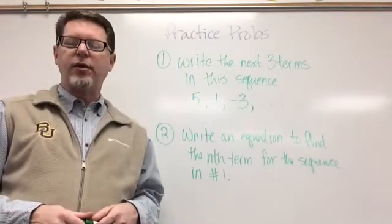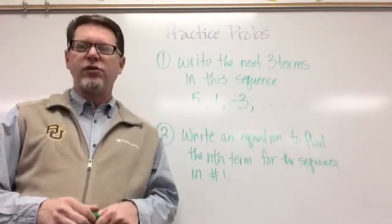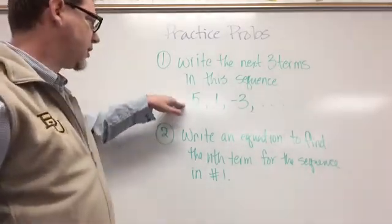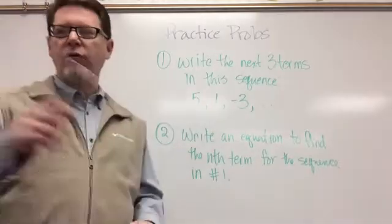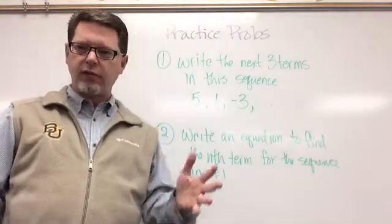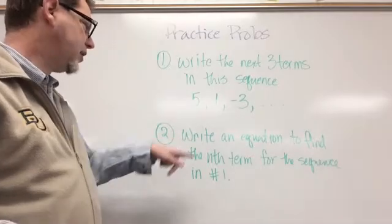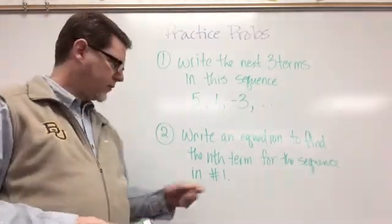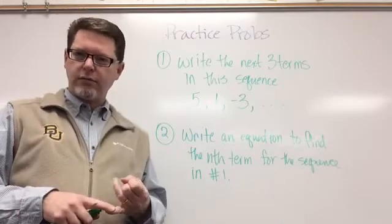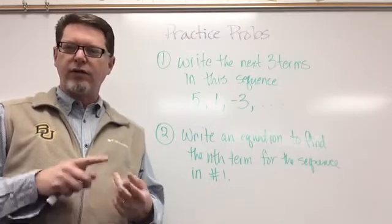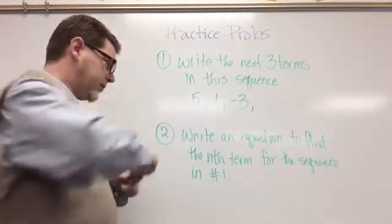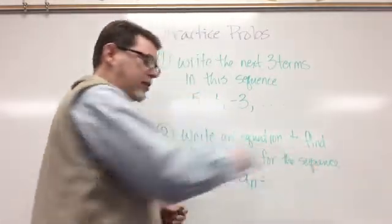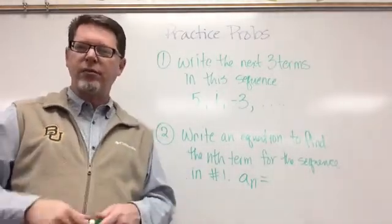Here are your two practice problems. Number one: write the next three terms in the sequence 5, 1, negative 3. Figure out what they are and write them down. Number two: write an equation to find the nth term for the sequence in number one. Figure out the common difference, write the phrase, use the distributive property to write the equation starting with a sub n equals, and tell me what the equation is. Submit a picture of your practice problems through Edmodo.